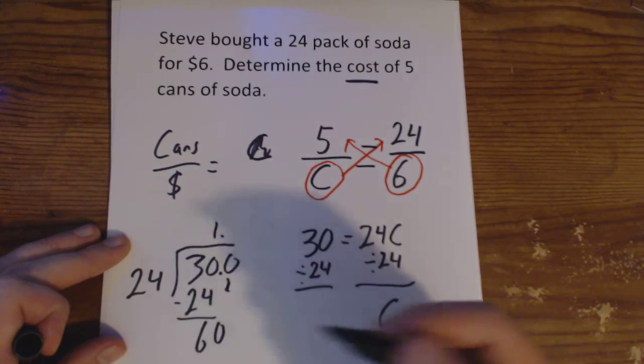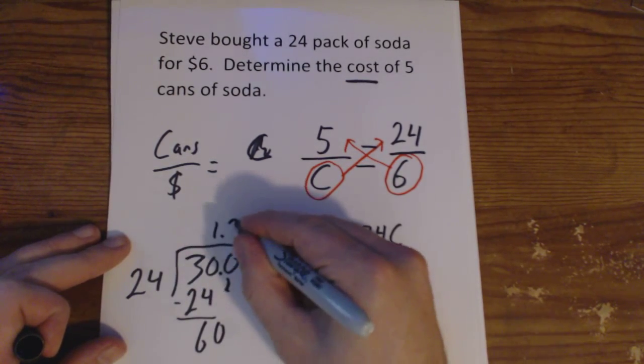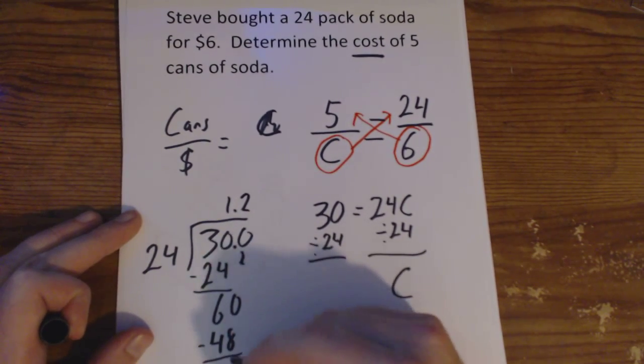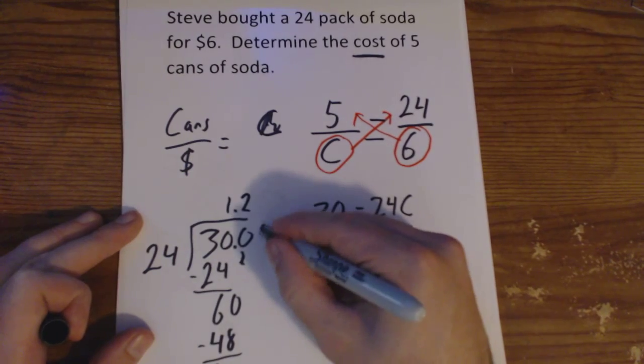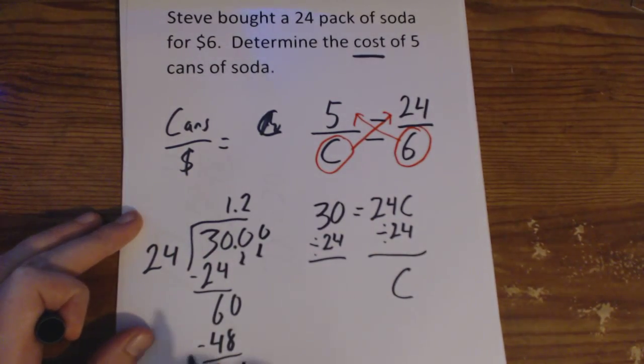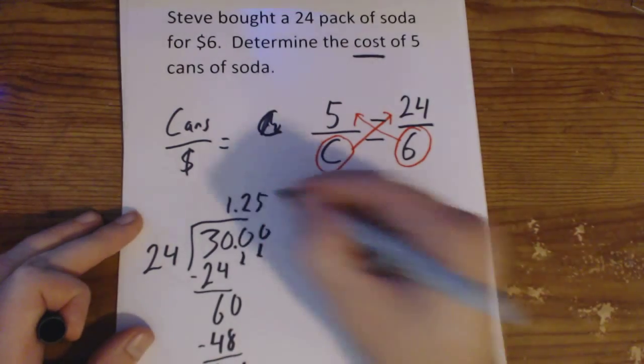Is 24 going to 60? Yes. How many times? 2. So that would be 48. 60 minus 48, 12. Bring down another 0, 120. How many times is 24 going to 120?